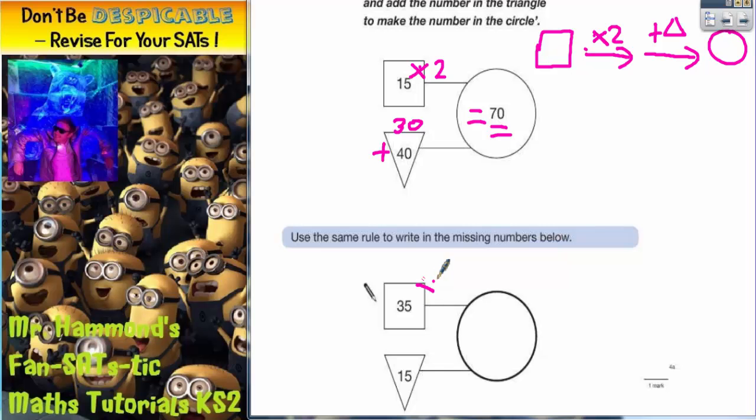I times it by 2. That is going to give me 70 and then I add on the number in the triangle. So we've got to do 70 add 15. If you can't do that in your head, quick column method, 70 add 15, 0 add 5 is 5, 7 add 1 is 8. So that first answer has to be 85.